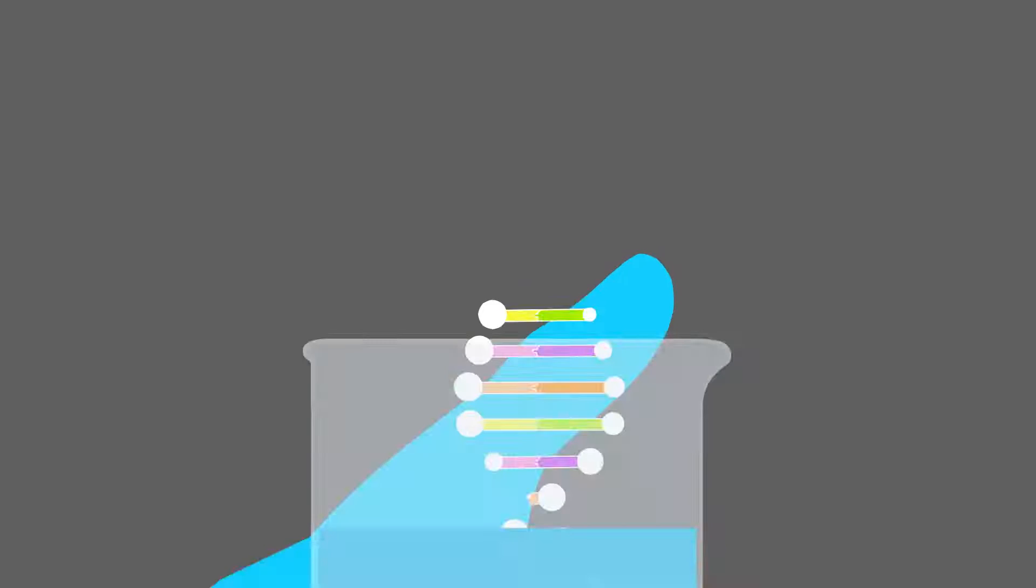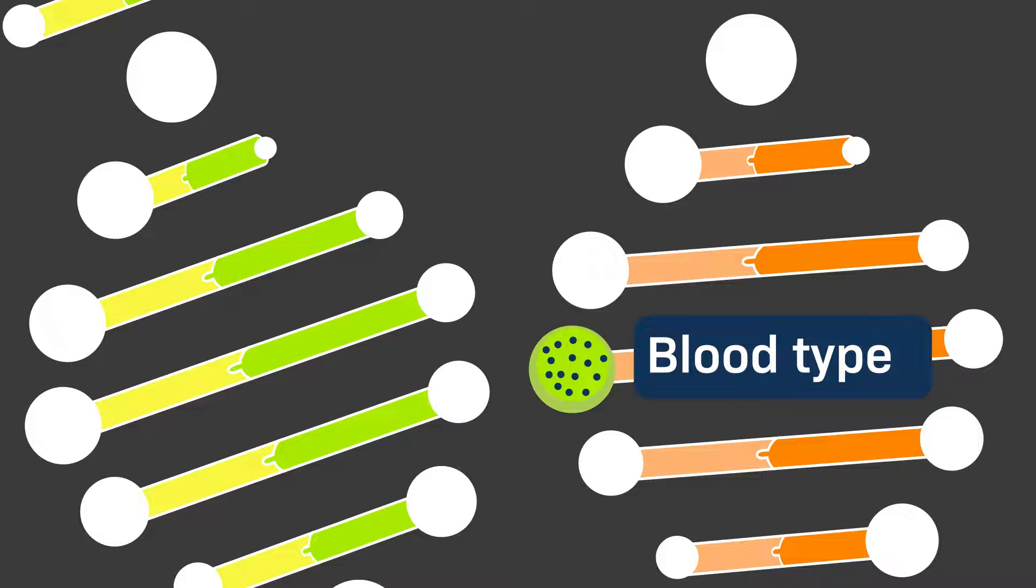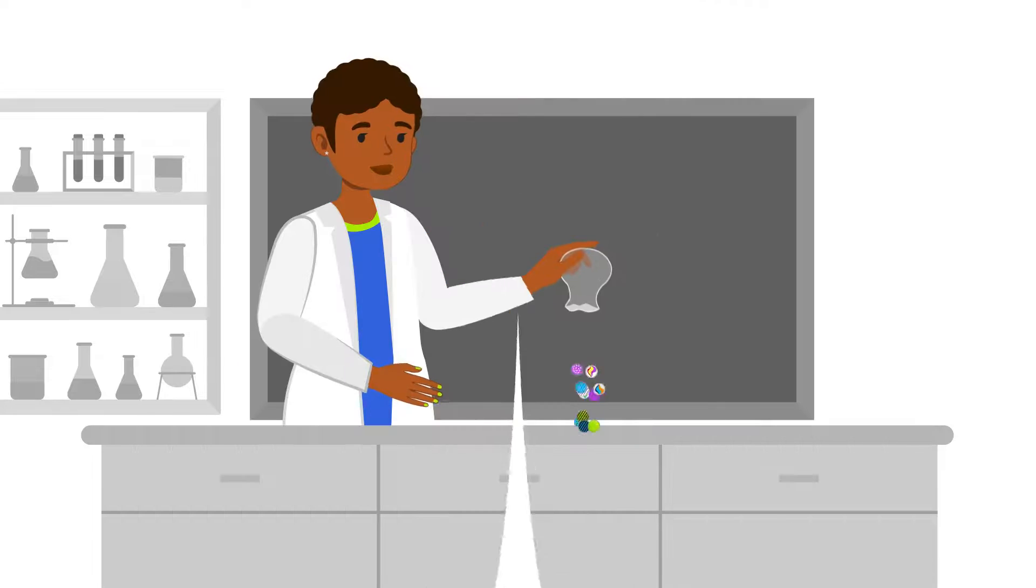This tells us that the biological traits that determine blood types have been exposed to different environmental pressures than the biological traits that determine skin tone. It shows that our decision to classify individuals into biological races according to certain traits, such as skin tone or hair texture, is arbitrary.